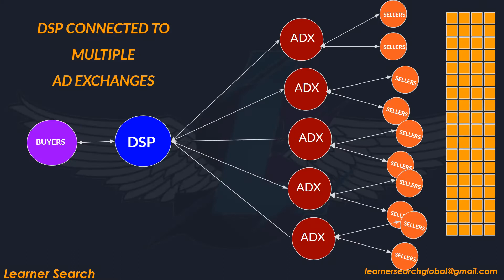On the buyer end, the ad exchange connects to the DSP. On the seller end, it connects to the sellers. Whenever a request is available from the DSPs, the ad exchange fulfills it with the help of the sellers it is connected to.